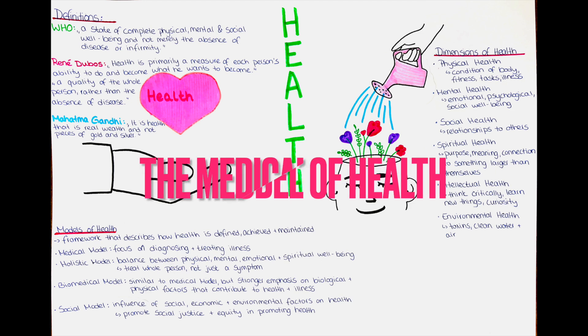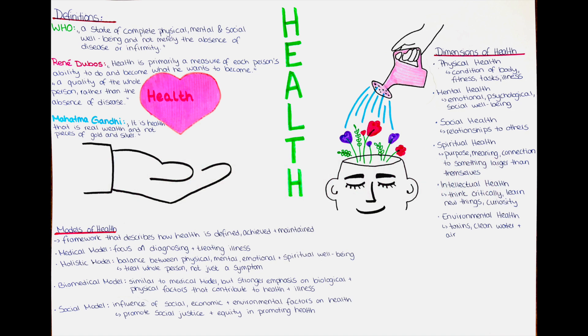The medical model of health focuses on diagnosing and treating illness or disease using medical interventions, such as medications, surgery and other medical procedures. It views health as the absence of disease or illness and emphasizes the importance of medical expertise in diagnosing and treating illness.